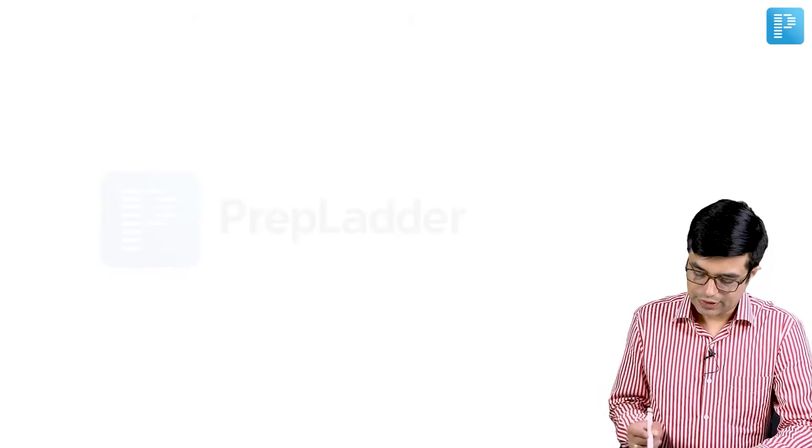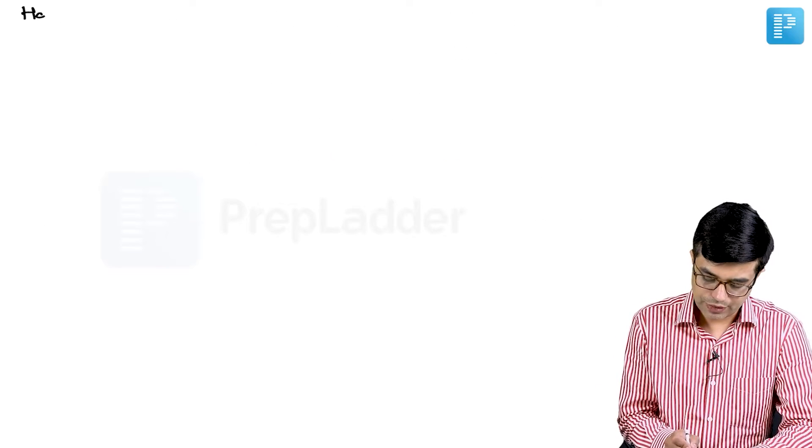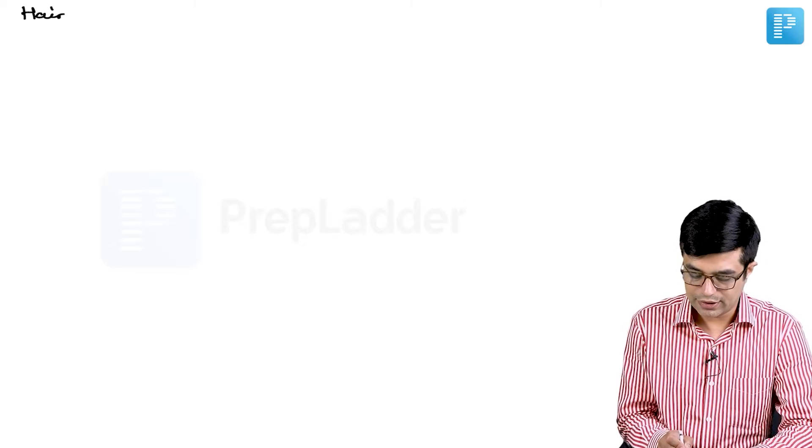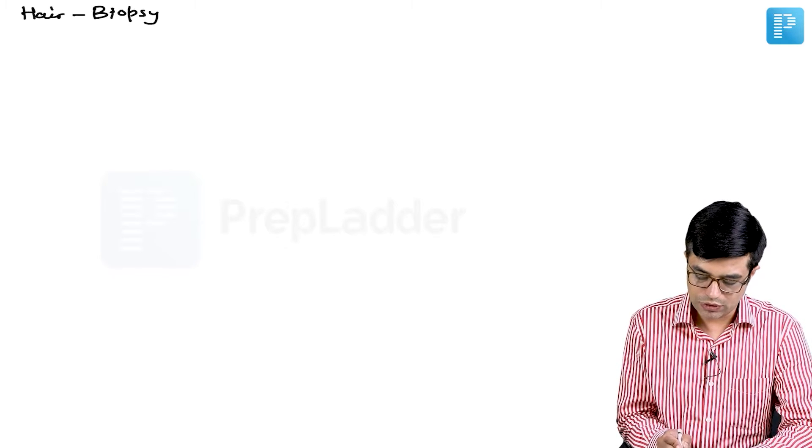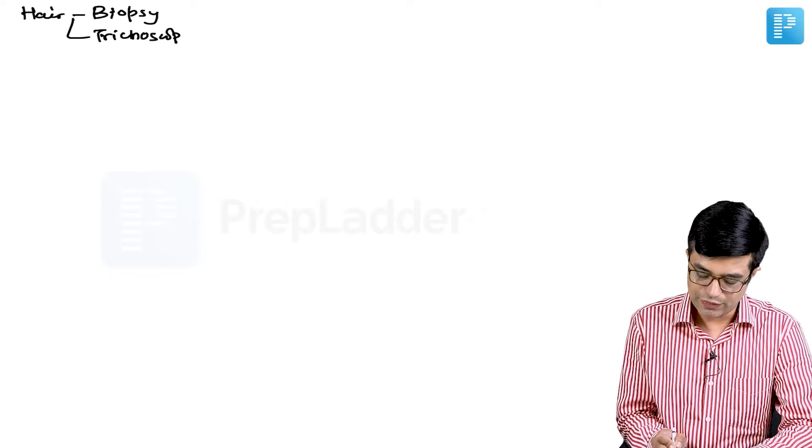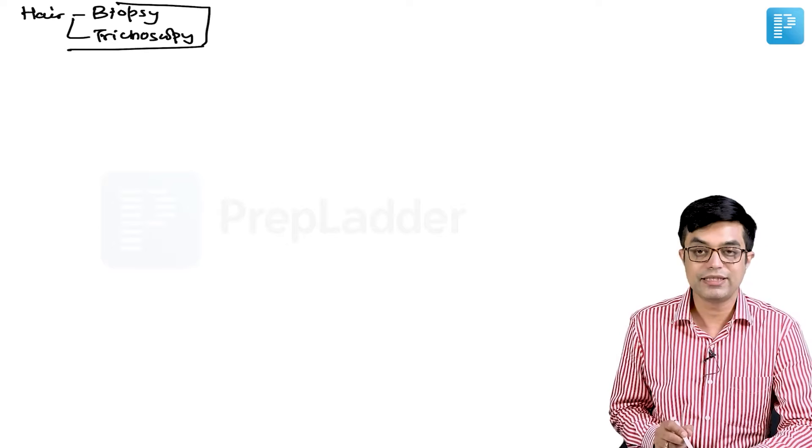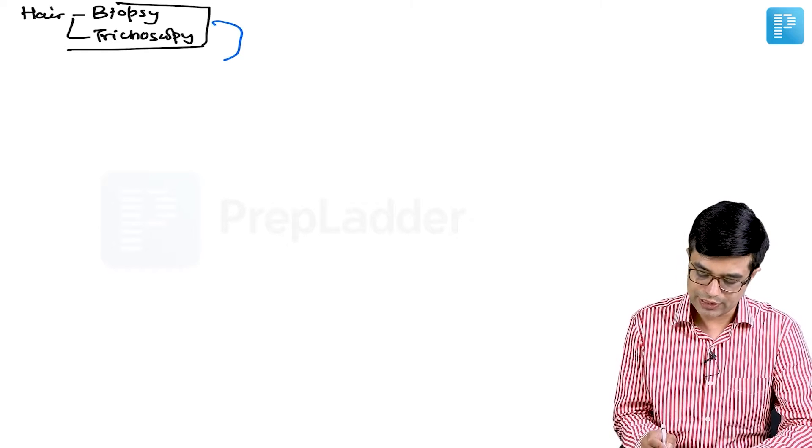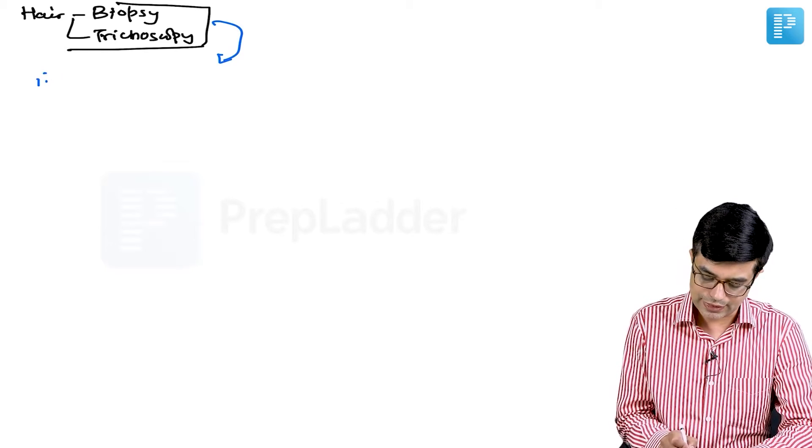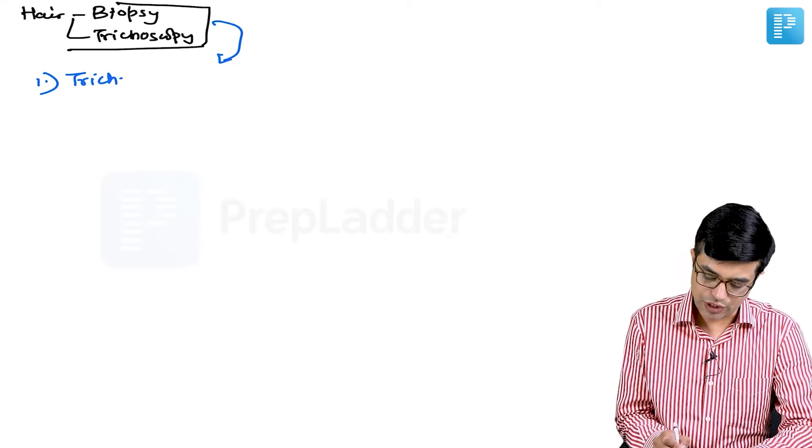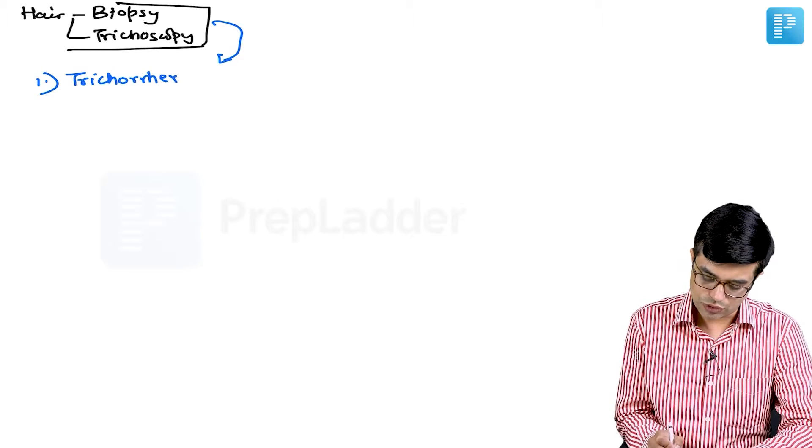If you do hair biopsy, if you look through trichoscopy, you will find specific abnormalities being seen in these individuals. What are the abnormalities you will find? First of all, there will be trichorexis nodosa.